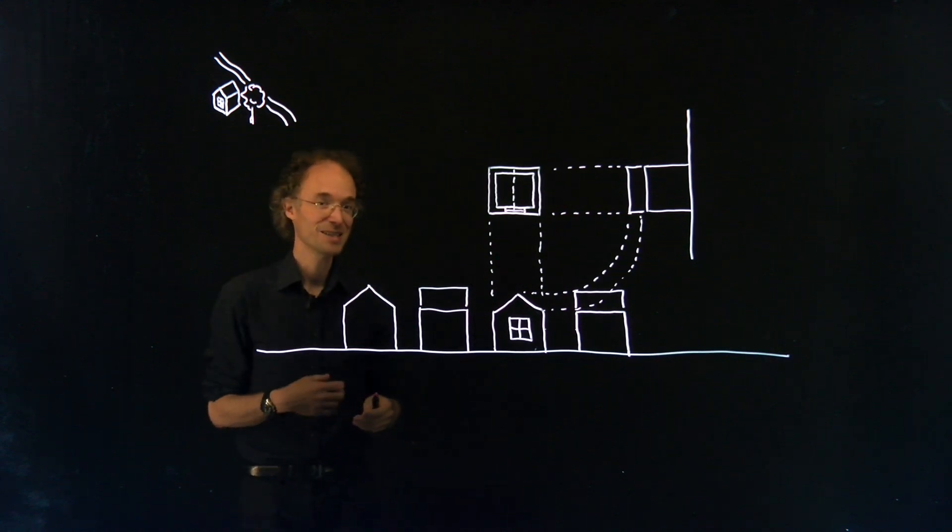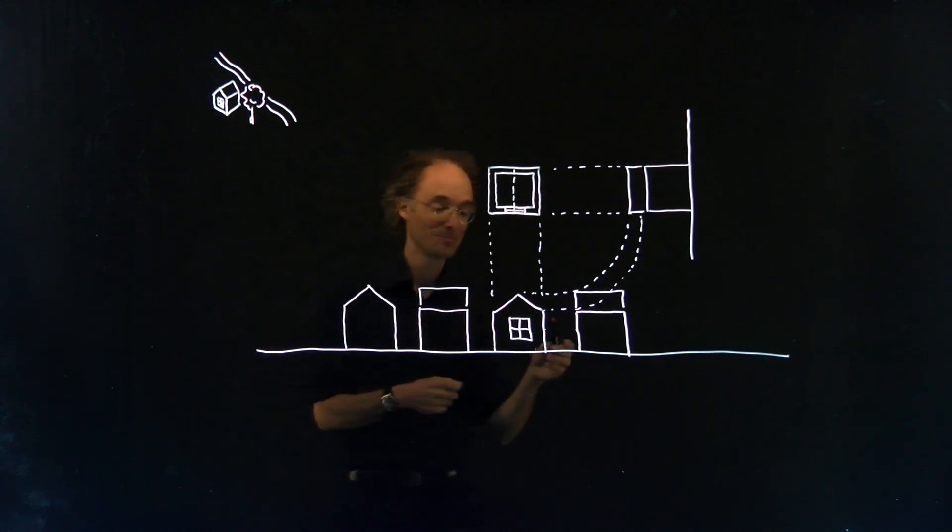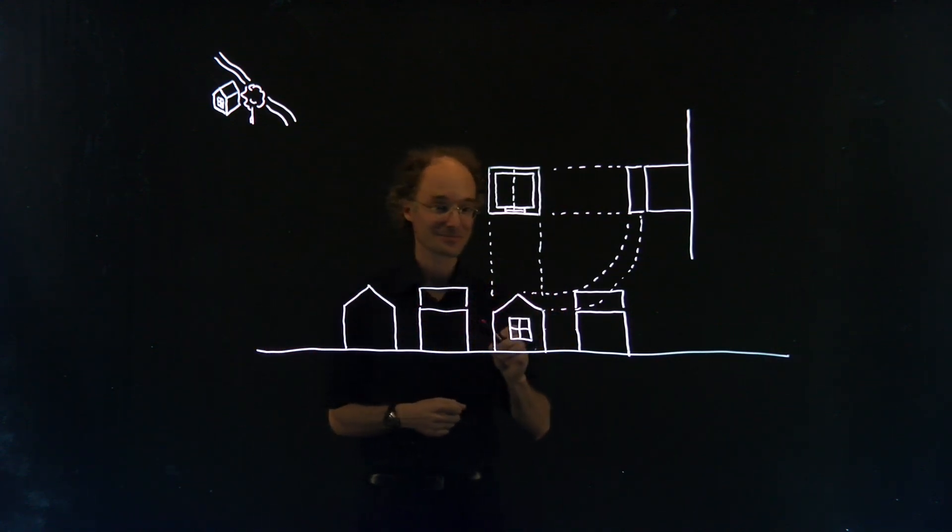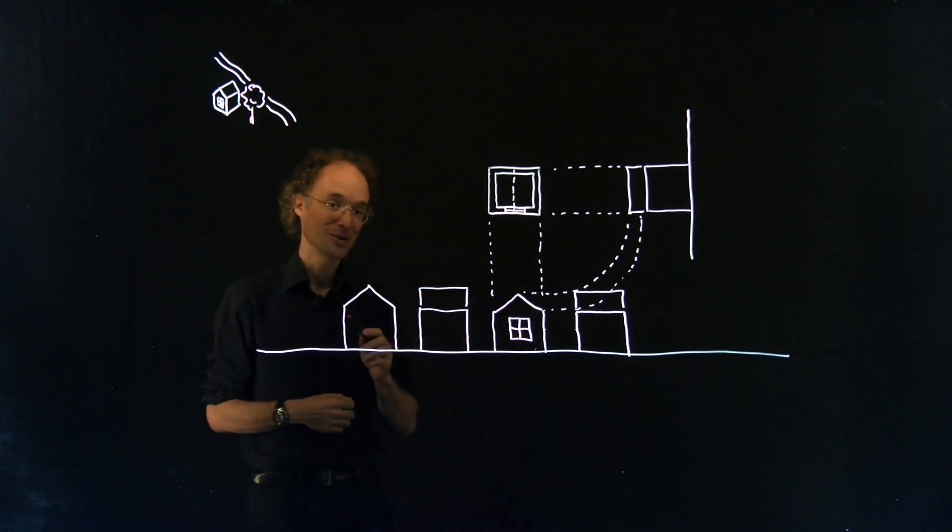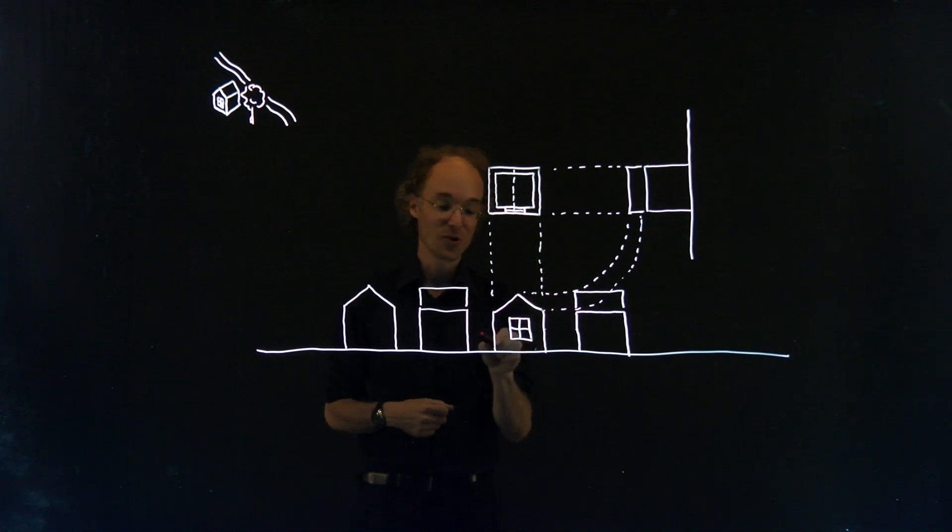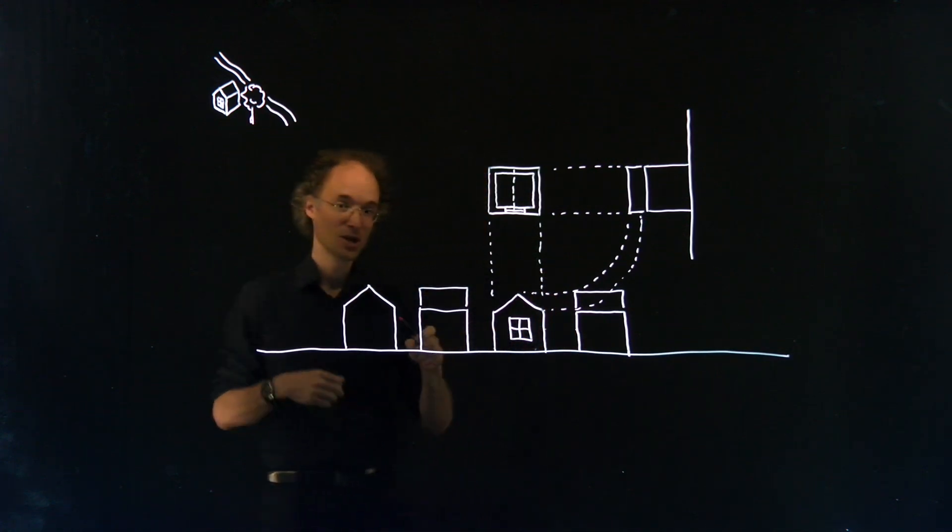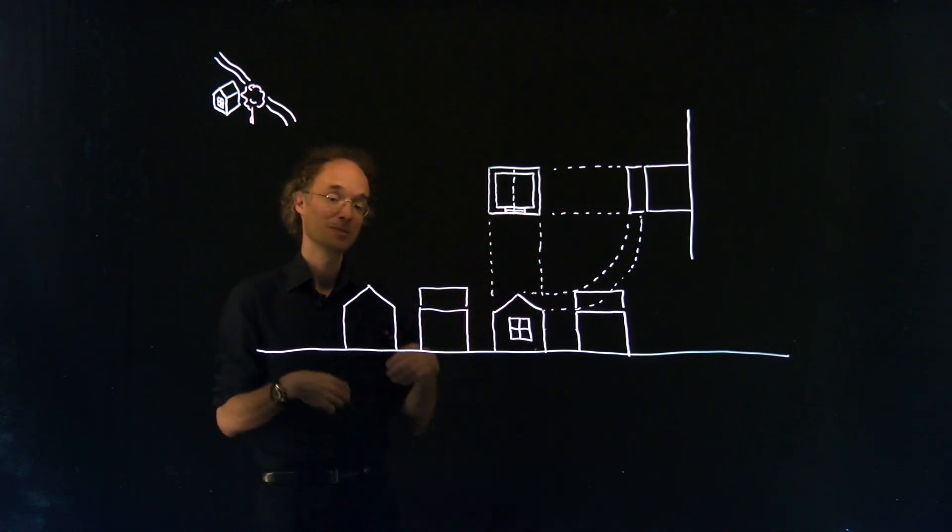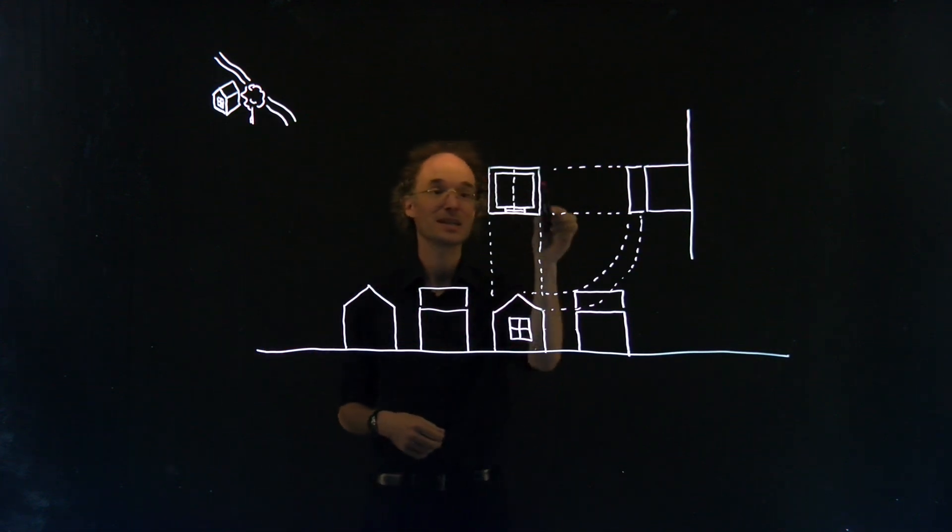The convention is, where everybody agrees on, is that a plan is a horizontal section through a building one meter above ground level. That's what I have here.